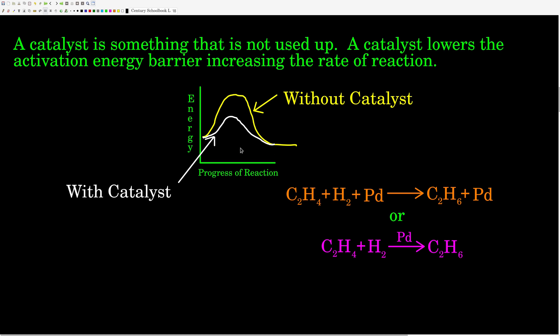This yellow curve here shows what the progress of reaction might look like without a catalyst. On the very left of the x-axis we have pure reactants, and on the right we have pure products. The reactants have to have enough energy to overcome this barrier in order to form the products. What a catalyst does is make that barrier lower, which means it's easier for the reaction to happen — typically at a lower temperature, and it makes it happen faster.